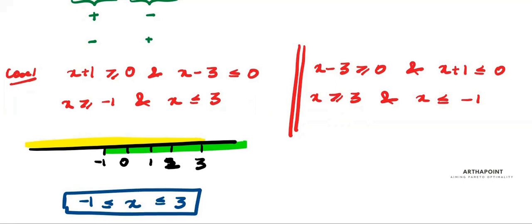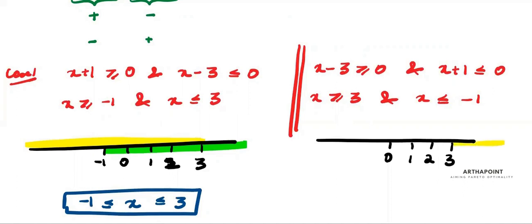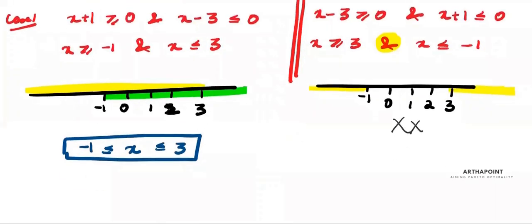Case 2: x ≥ 3 and x ≤ -1. There is nothing common in this case, so we discard it. Therefore, P is the set of x such that x is between -1 and 3, that is P = [-1, 3].